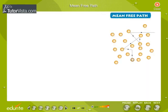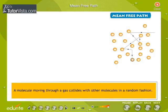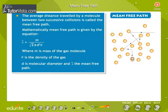Mean Free Path: A moving molecule collides with other molecules in a random fashion. The average distance traveled by a molecule between two successive collisions is called the mean free path. Mathematically, mean free path is given by the equation.